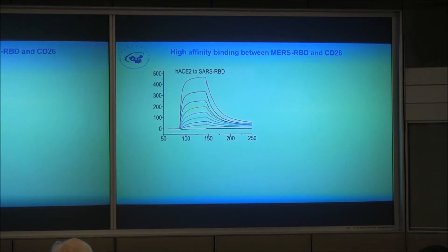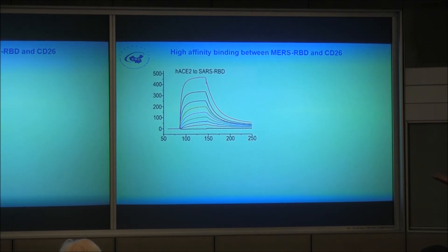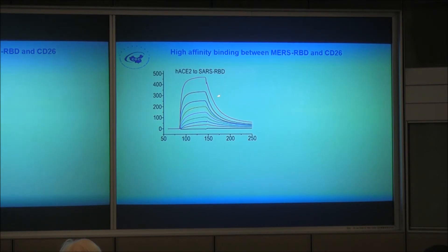This shows that my lab mainly uses two techniques: structural biology — crystallography work — and we also started doing some single-molecule cryo-EM. Another approach is biophysical methods: immobilizing one partner and flowing through the other by using surface plasmon resonance, real-time binding. For example, we used human ACE2 — the SARS receptor — fixed it on the surface, and you can see SARS RBD binding beautifully. That's the positive control.